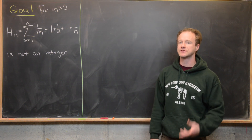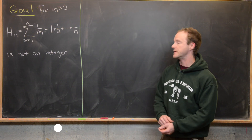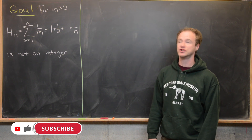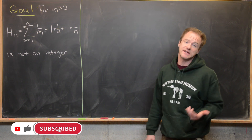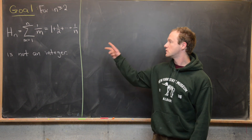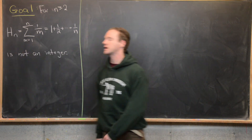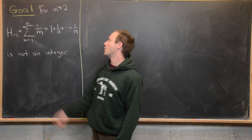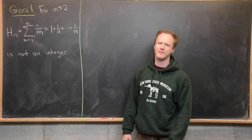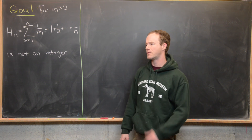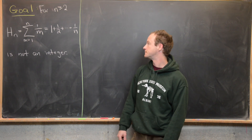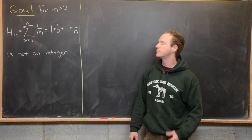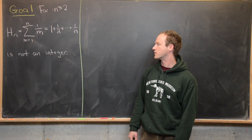Here we're going to prove a pretty classic result from number theory: the nth harmonic number is not an integer unless n equals 1. The nth harmonic number is the sum as m goes from 1 to n of 1 over m — in other words, a partial sum of the harmonic series. That's equal to 1 plus 1/2 plus 1/3 all the way up to 1/n.